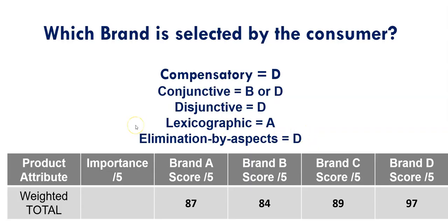Summarizing the different approaches: brand D won in most cases, brand A won on the most important attribute in the lexicographic rule, and we might consider brand B in some cases. Looking back at the compensatory model results, brand D is the strongest overall and tended to do well across all decision approaches. Interestingly, brand C is the second strongest overall in the compensatory model but was never selected by any of the non-compensatory rules.